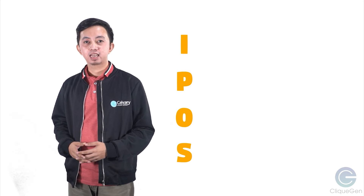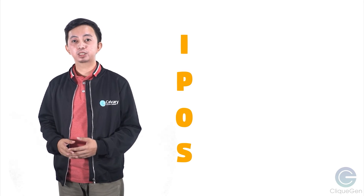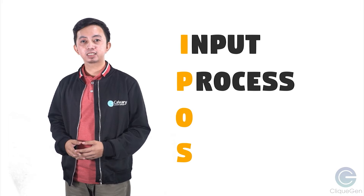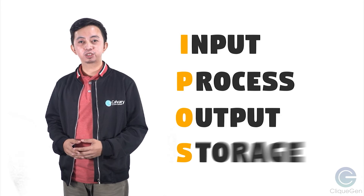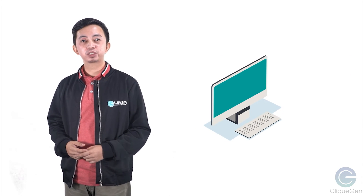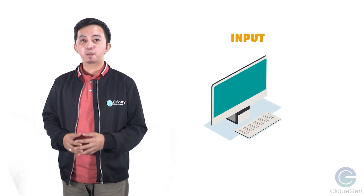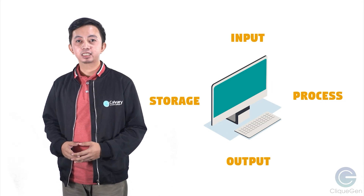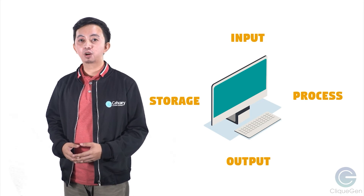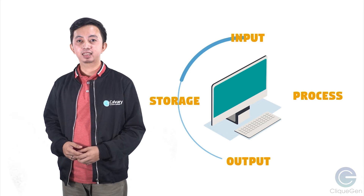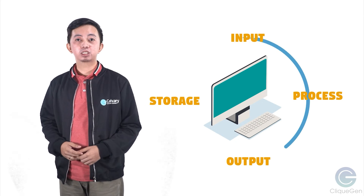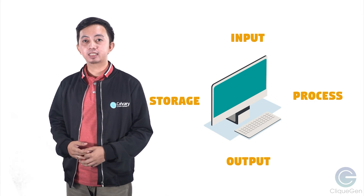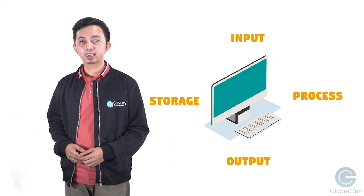How does a computer work? A computer works on the IPOS cycle. IPOS cycle stands for input, process, output, and storage. A computer accepts input, processes data, produces output, and stores data. The movement of data can go on and on like a cycle. This set of steps is called the information data processing cycle, or IPOS cycle.